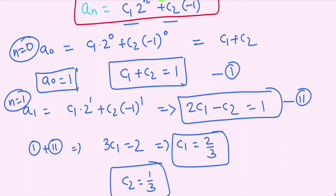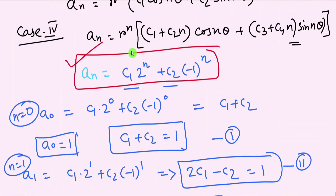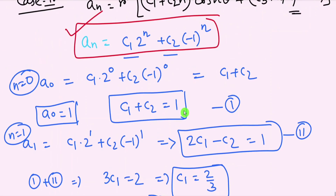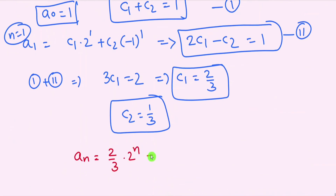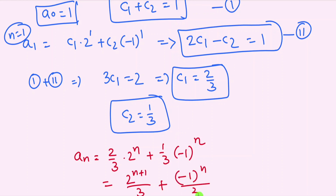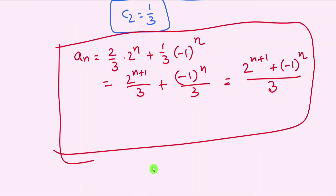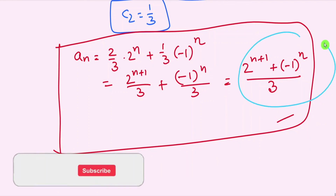Substituting C₁ = 2/3 and C₂ = 1/3 into the general solution: a_n = (2/3)·2ⁿ + (1/3)·(−1)ⁿ = (2^{n+1} + (−1)ⁿ) / 3. This is the closed formula for a_n.